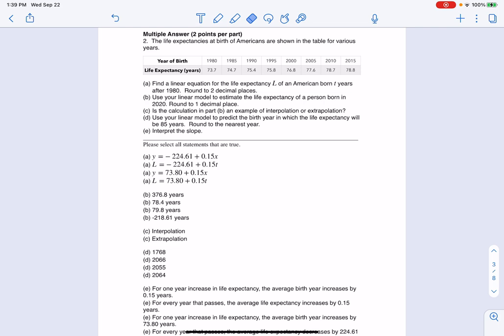So let's go through and find this. The first thing I'm going to be asked is, can I find a linear equation for life expectancy of an American born T years after 1980? And really, I should have started with let's read the question first. So the life expectancies at birth of Americans are shown in the table for various years. It looks like the letters I'm being instructed to use are L and T. And just based off of that, I can rule out these two options for A because they don't have the right letters. I really need to figure out if the y-intercept is negative 224 or 73.8.